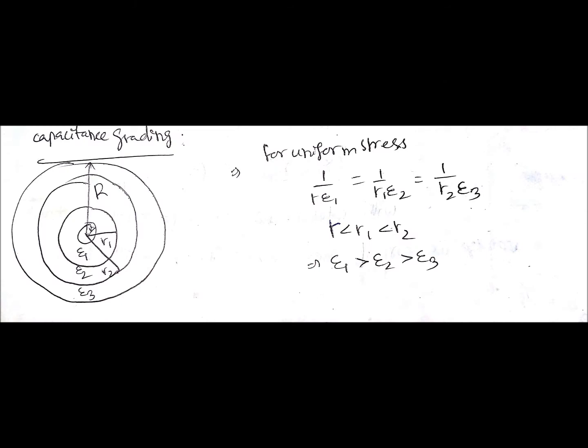To improve string efficiency, we need to maintain uniform stress gradient for all layers of the underground cable. For maintaining that, the condition is capacitance grading, which means you use several layers of different dielectric medium with epsilon 1, epsilon 2, and epsilon 3. With this approach, you can get uniform stress.